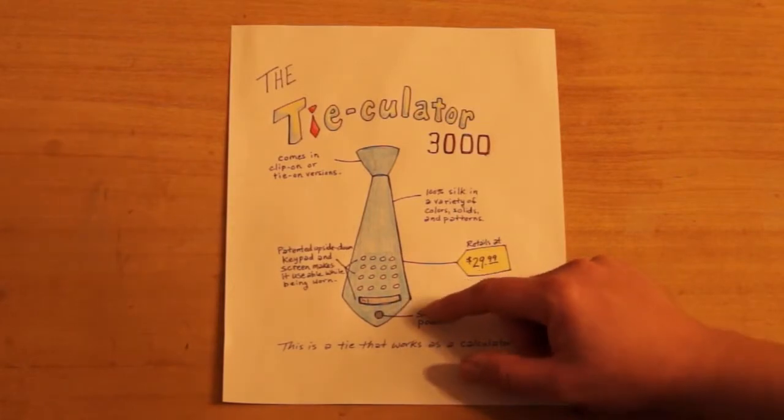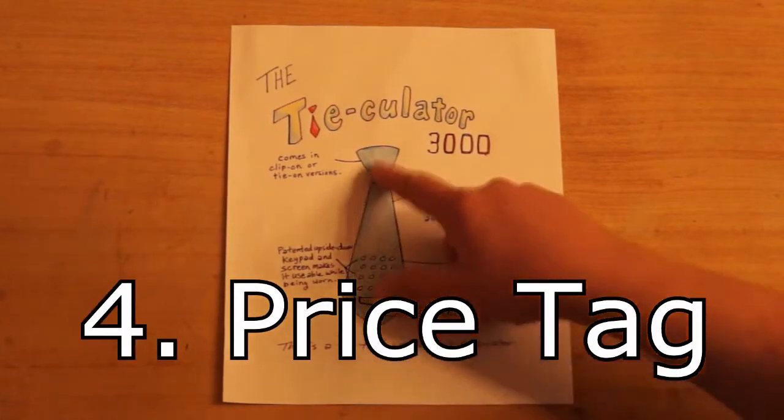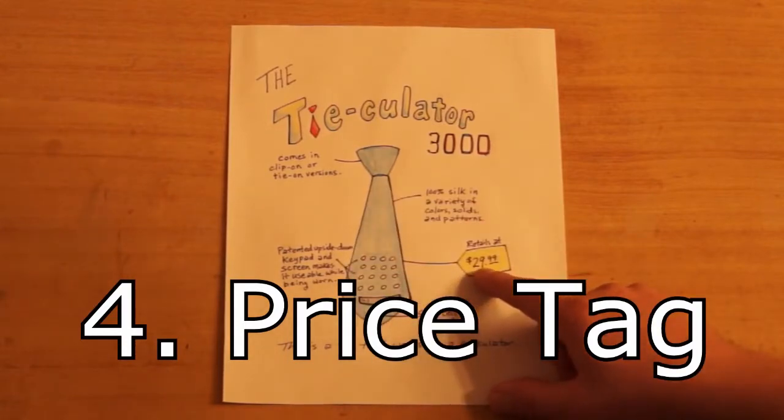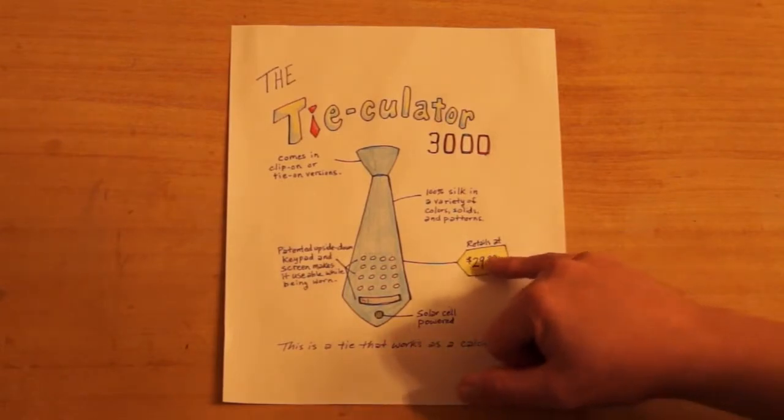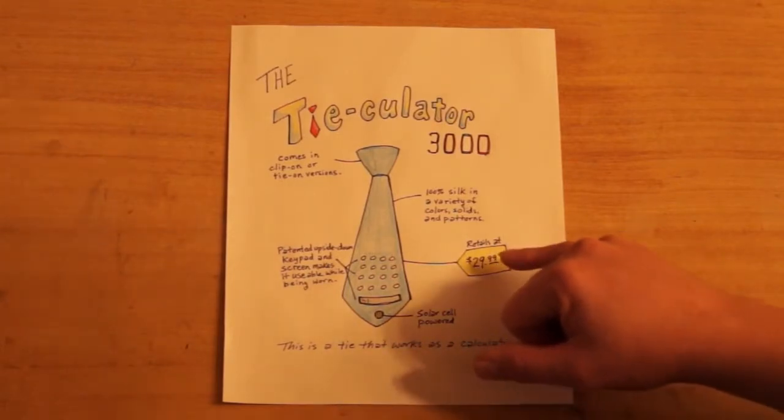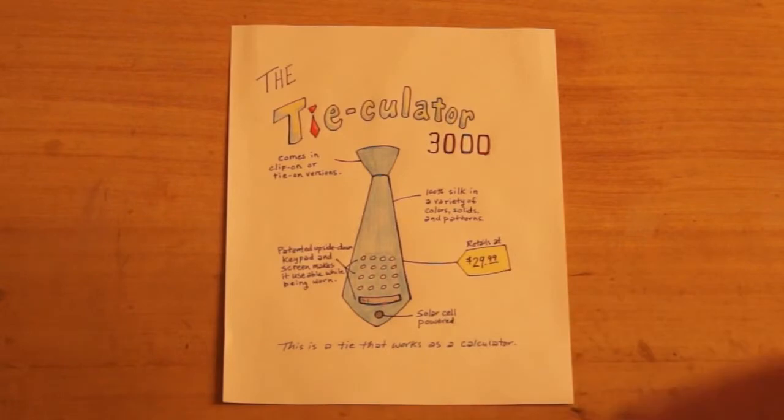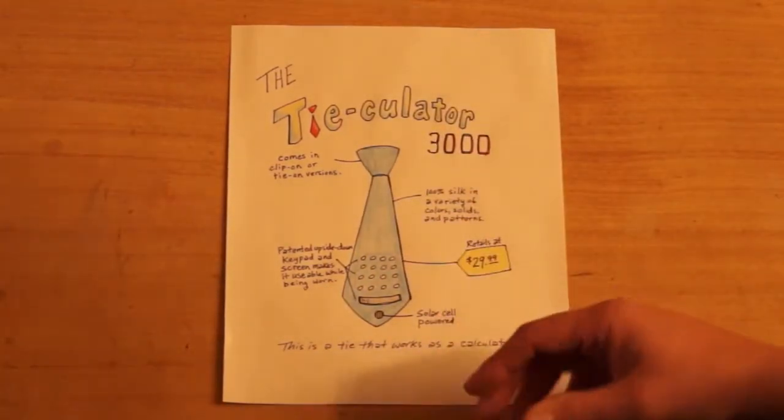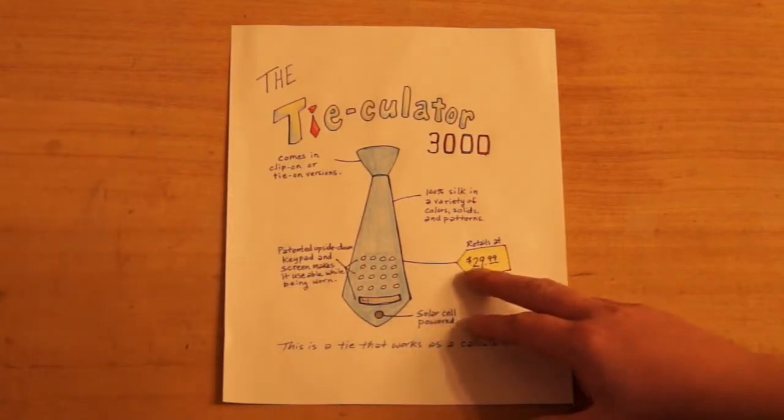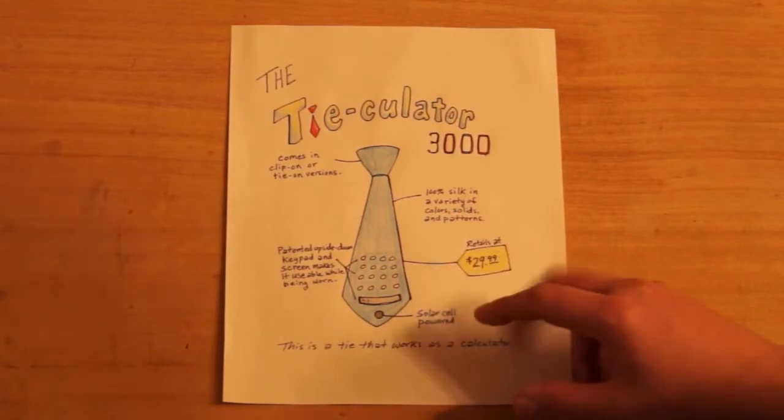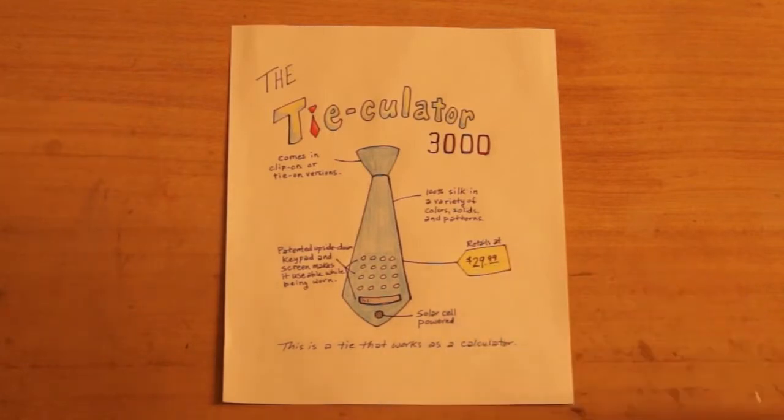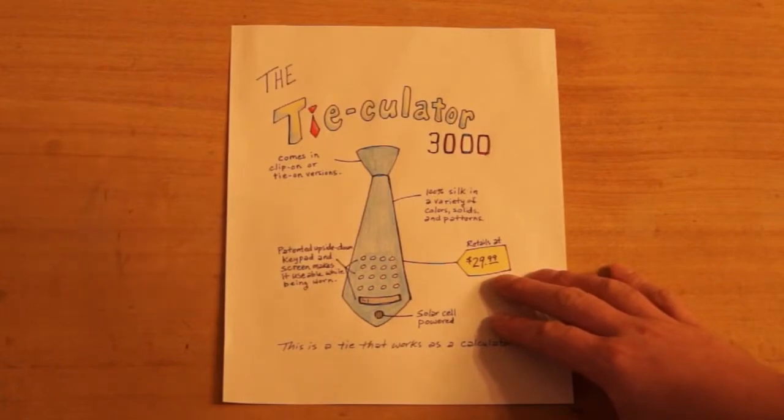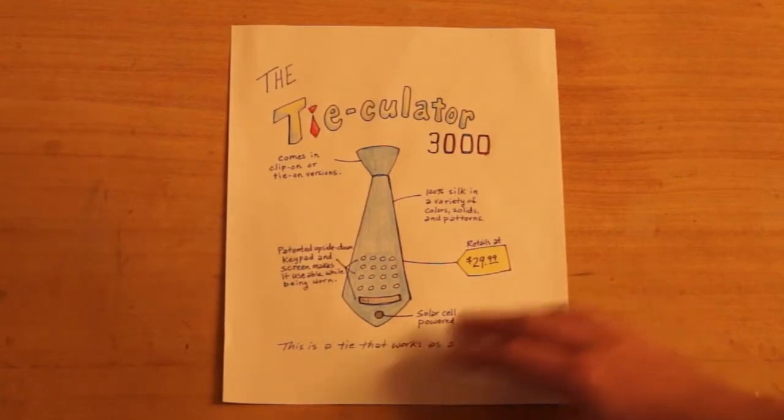And then the fourth thing is to include a price tag. How much do you think your invention should cost? And mine, I put retails at $29.99. A lot of times you'll see on price tags, they take off one penny. So it makes it sound like it's largely less expensive. But all they do is take off one penny. So instead of $30, it's $29.99. So I followed that kind of a trick that the different people will use when they're selling things.